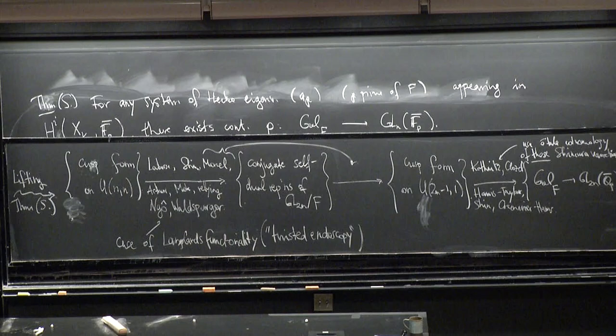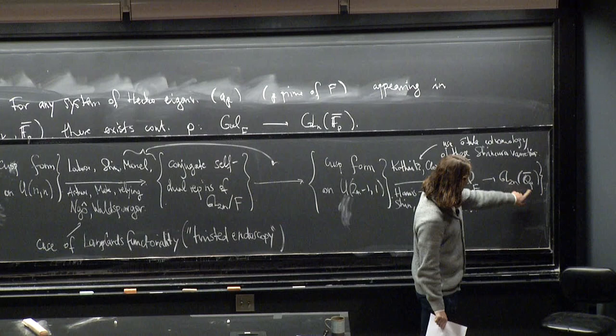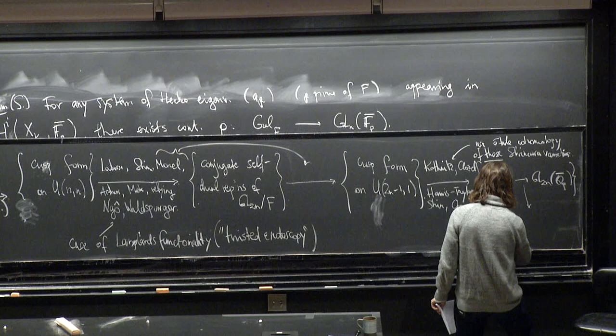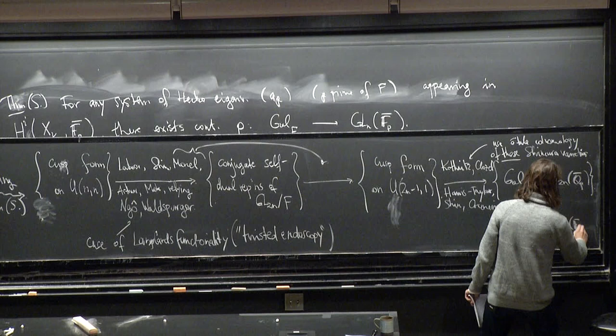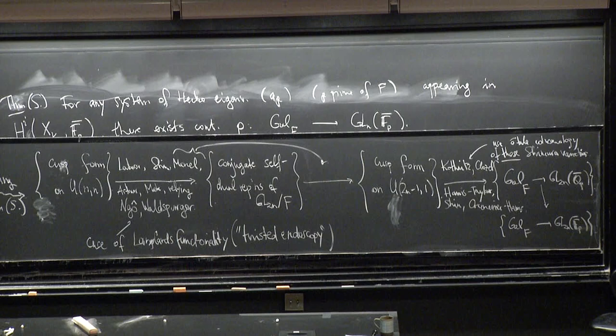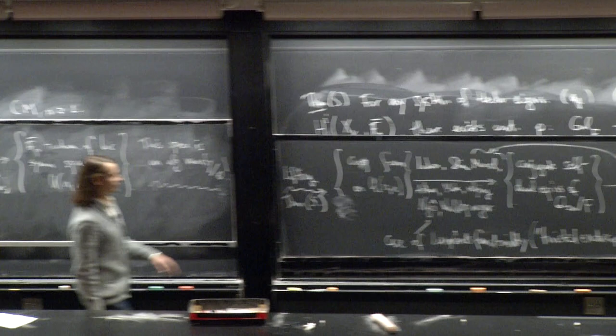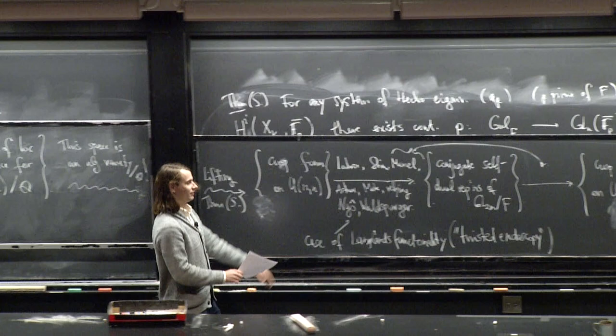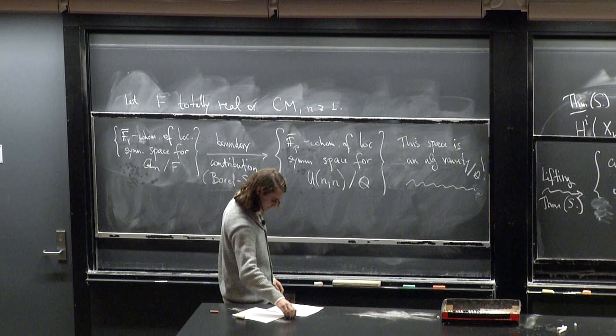So what did we do? We started with this Fp bar cohomology class, went all this way, and got this representation into GL2N Qp bar, which is not quite what we wanted. So first of all, it depended on lifting at one point. So let's forget about lifting and go to the residue field again. We can reduce and go mod P. And then we wanted an N-dimensional representation, and we produced a 2N-dimensional representation, but then you can show that this decomposes as a direct sum of an N-dimensional guy, and essentially its dual. And then you have it.